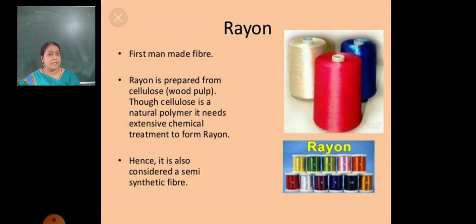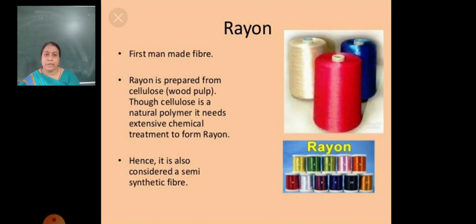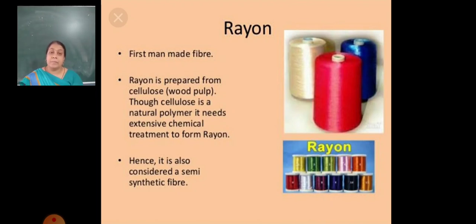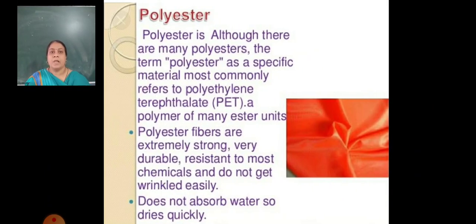Why is rayon considered a semi-synthetic fiber? Because here both chemicals as well as natural things are included. The natural thing here is cellulose, which is a plant product, and some chemicals are also used to make rayon. That is why rayon is a semi-synthetic fiber.